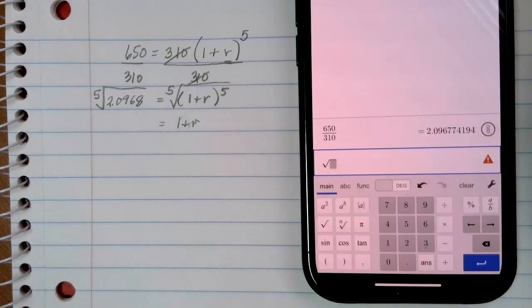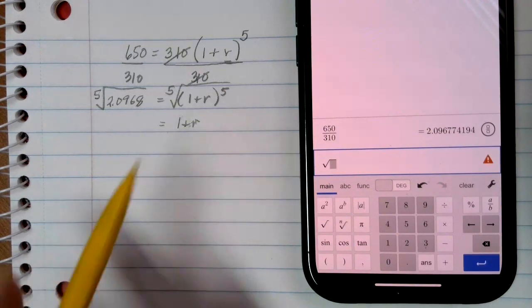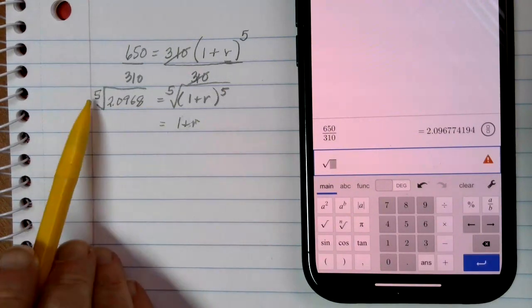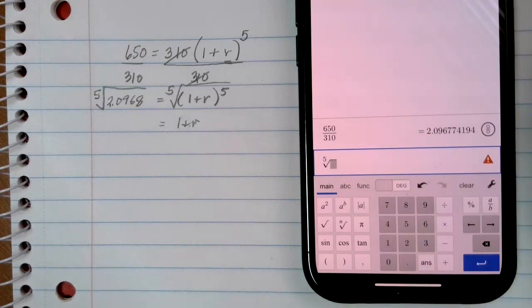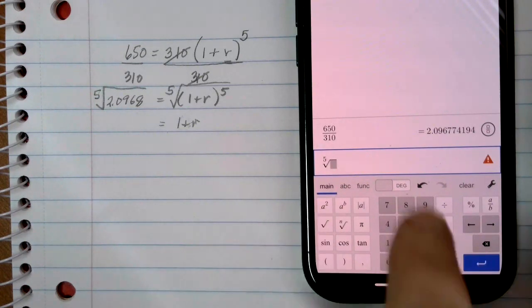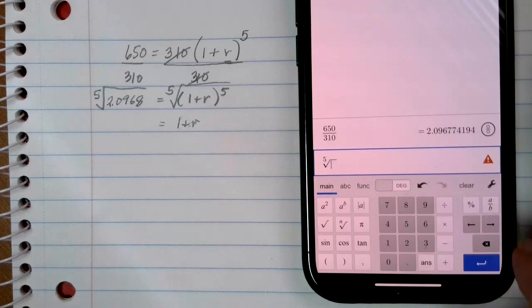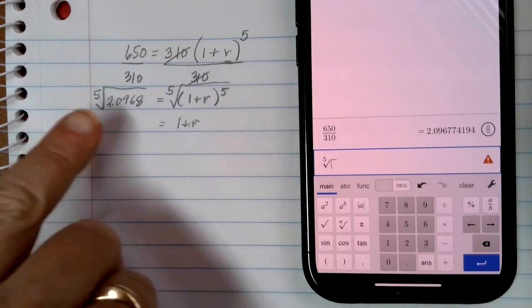And it's waiting for which root you want. So it's blinking right there. I want the 5th root, so I'm going to type 5 in where that exponent button is, or that upper button in front of the root. Now, I want to move inside my square root symbol there. And this time, I want to take this 5th root of 2.0968.